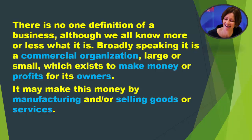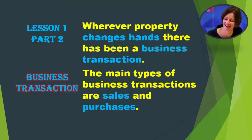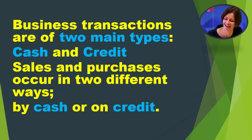Wherever property changes hands, there has been a business transaction. The main types of business transactions are sales and purchases. Business transactions are of two main types: cash and credit. Sales and purchases occur in two different ways — by cash or on credit.